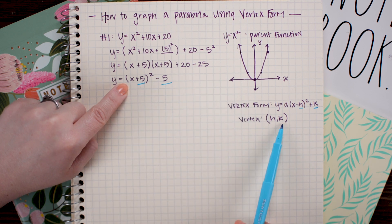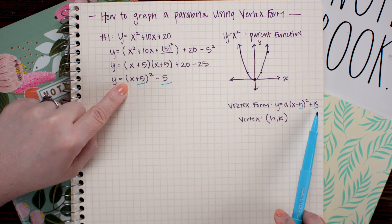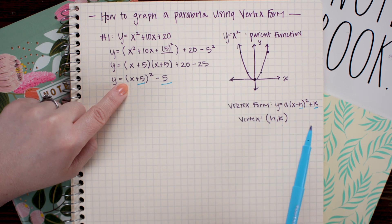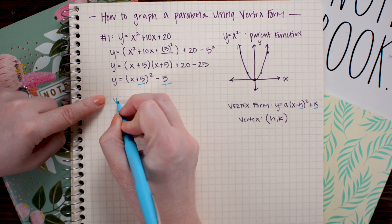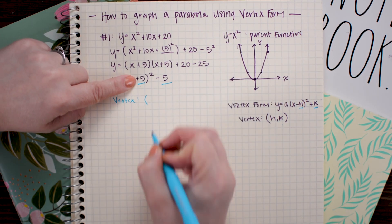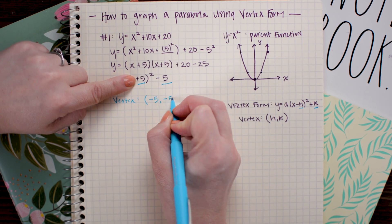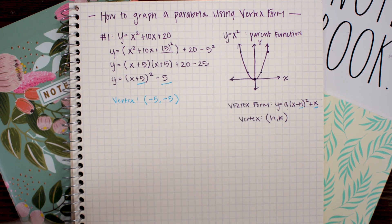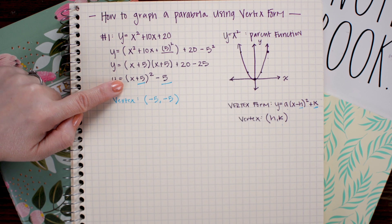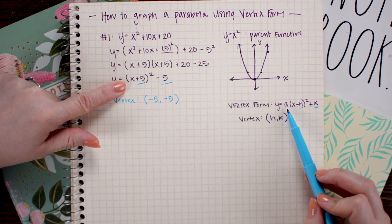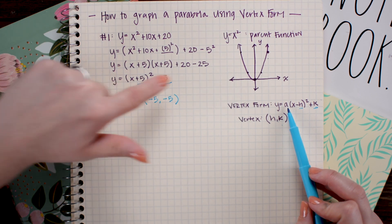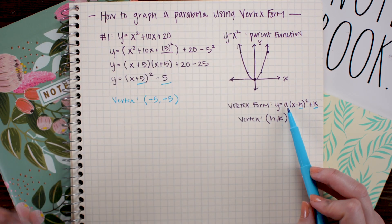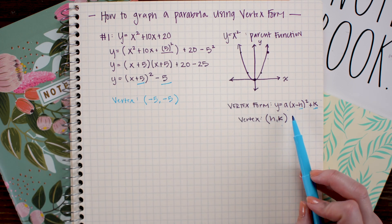The y coordinate of our vertex — the k value — keeps the same sign as what appears at the end. So the vertex for this equation is negative 5, negative 5. Because there's no coefficient written outside the parentheses, a simply equals 1, meaning it's just the same as our standard parabola — not flipped, not stretched, not compressed. Now let's go ahead and graph this.